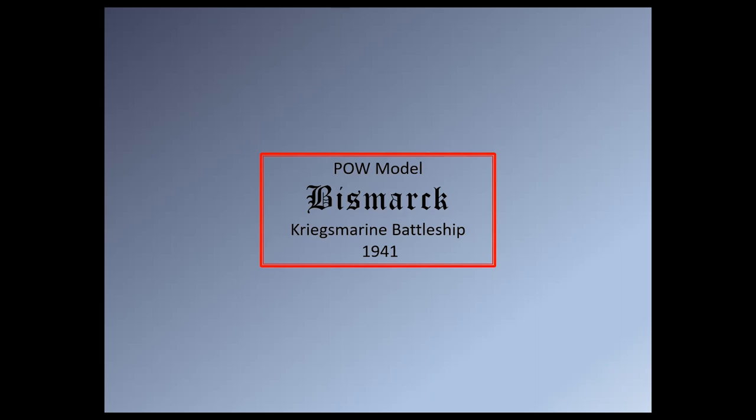Bismarck conducted only one offensive operation during her eight-month career, code-named Rheinübung, Exercise Rhine, which lasted for eight days in May 1941. Bismarck and the heavy cruiser Prinz Eugen were to break into the Atlantic Ocean to threaten Allied shipping and convoys from North America to Great Britain. The two ships were detected several times off the coast of Norway, and British naval units were deployed to block their route.